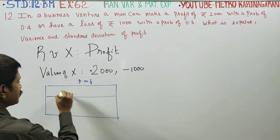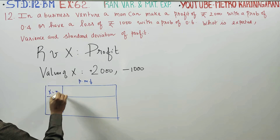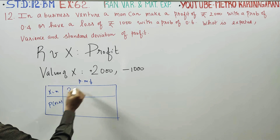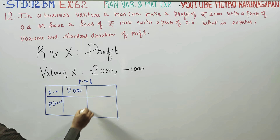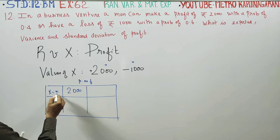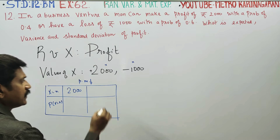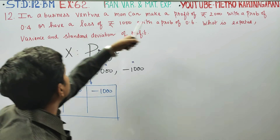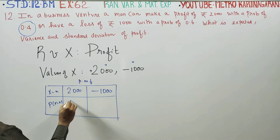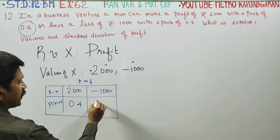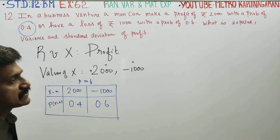The probability mass function is defined as: the probability that X equals x. So when X = 2000, probability is 0.4, and when X = -1000, probability is 0.6. This is our probability mass function.